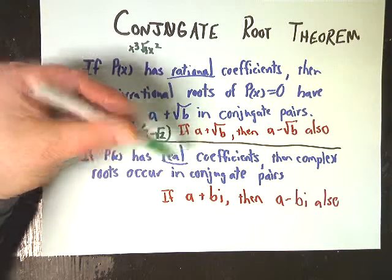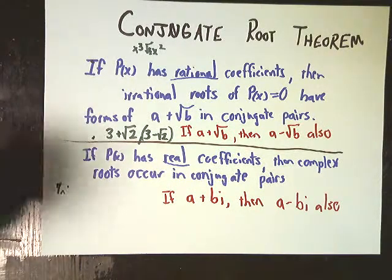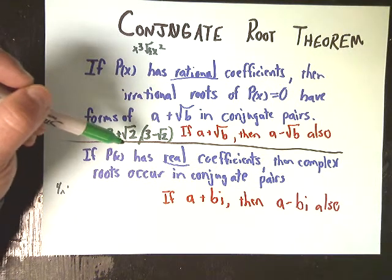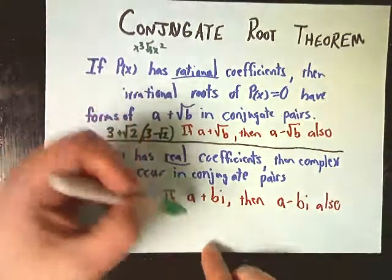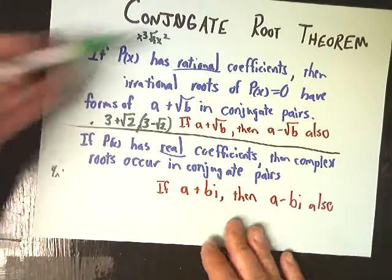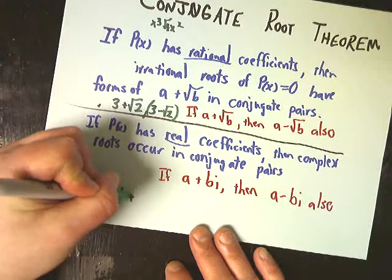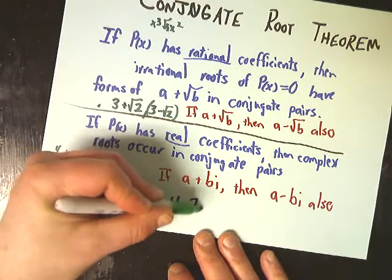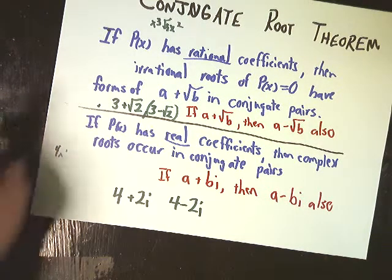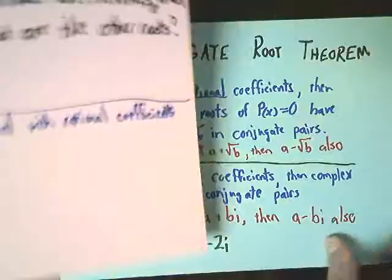On the other side, if the polynomial has real coefficients — anything other than imaginary numbers in front of the x — and you have complex roots like a + bi, you have to have the a - bi version as well. So if I have 4 + 2i, I also need 4 - 2i. Both of those cancel each other out as roots in order to give me only real numbers for the coefficients.